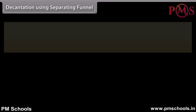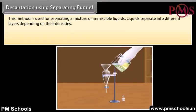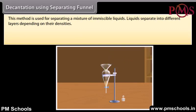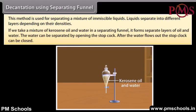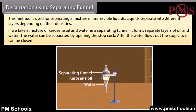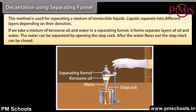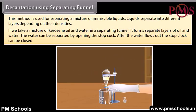Decantation using a separating funnel: This method is used for separating a mixture of immiscible liquids. Liquids separate into different layers depending on their densities. For example, if we take a mixture of kerosene oil and water in a separating funnel, it forms separate layers of oil and water. The water can be separated by opening the stopcock, and after the water flows out, the stopcock can be closed.